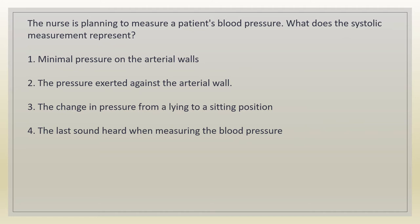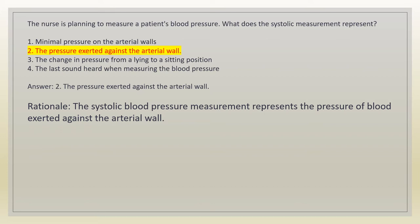The nurse is planning to measure a patient's blood pressure. What does the systolic measurement represent? 1. Minimal pressure on the arterial walls. 2. The pressure exerted against the arterial wall. 3. The change in pressure from a lying to a sitting position. 4. The last sound heard when measuring the blood pressure. Answer: 2. The pressure exerted against the arterial wall. Rationale: the systolic blood pressure measurement represents the pressure of blood exerted against the arterial wall.